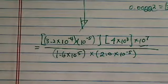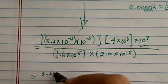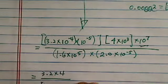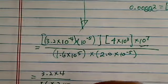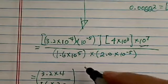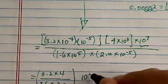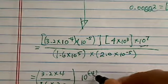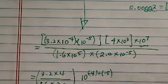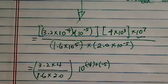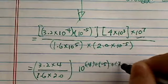Now let's combine this one, so we have three point two times four, and then one point six times two point zero, that's all the numbers. And then I have ten to the minus four plus minus five, that's on the top, and then plus ten to the seventh.